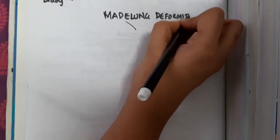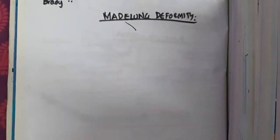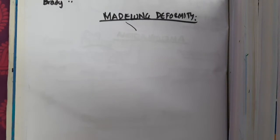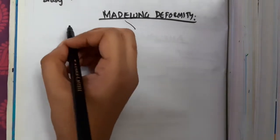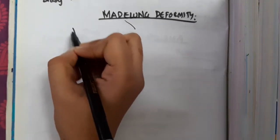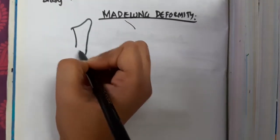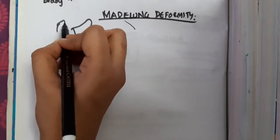This is Madelung deformity, also called congenital subluxation of the wrist. In this Madelung deformity or congenital subluxation of the wrist, this is the radius, and this is the ulna.